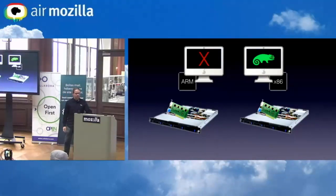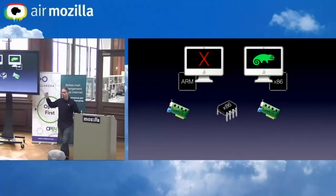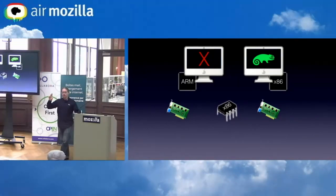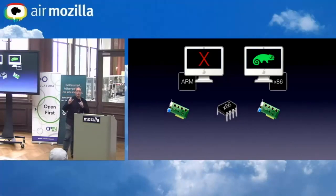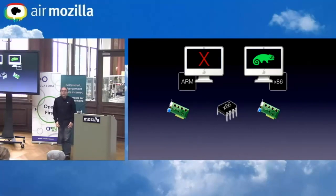Why does nothing happen? The driver that your firmware needs to drive the video adapter comes from within the graphics card itself — the graphics card delivers a binary block driver to your firmware to execute. Because pretty much every system out there is x86, that driver is actually x86 code.